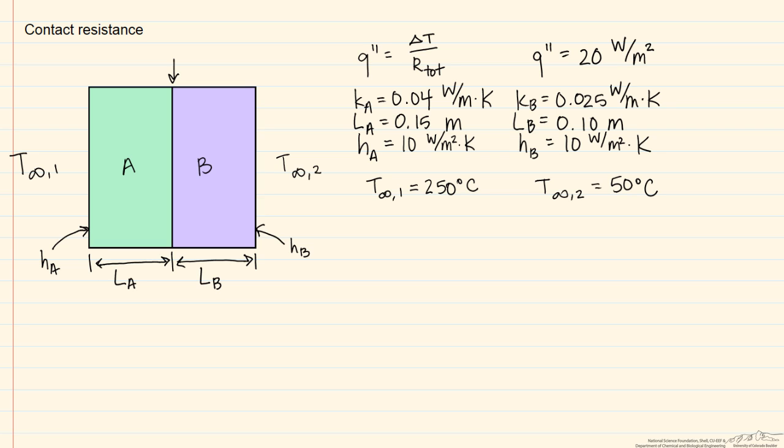In order to find our contact resistance, we have to find the total resistances, and then use a thermal circuit to determine what that contact resistance is. So our total resistance is going to be equal to our change in temperature, divided by our flux, which is 250 degrees C minus 50 degrees C, divided by our 20 watts per meter squared.